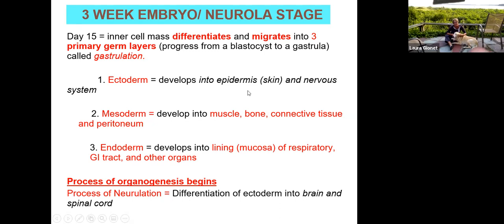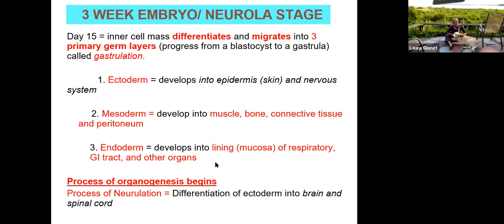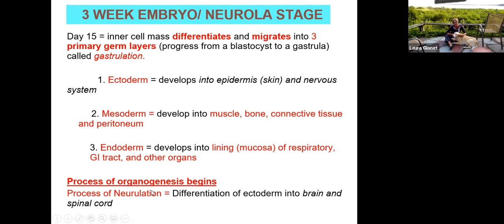The ectoderm, at the outer surface, develops into the epidermis and the nervous system. The mesoderm in the middle develops into all the connective tissues — muscle, bone, the peritoneum. The endoderm within develops into the linings of the respiratory system, the GI tract, and some other organs. At the end of that process, about three weeks, we enter into organogenesis, where we start to develop all the organs and organ systems — beginning about day 21 to 22, just before it becomes a one-month embryo.